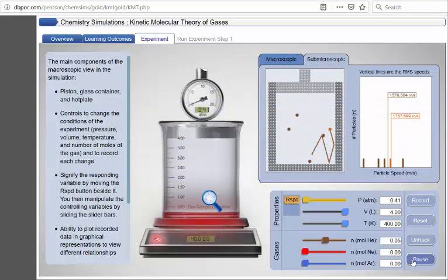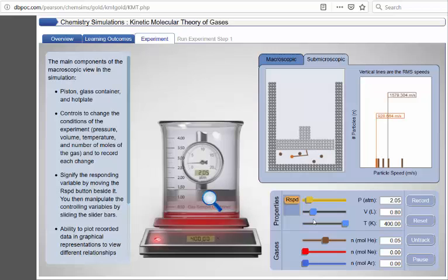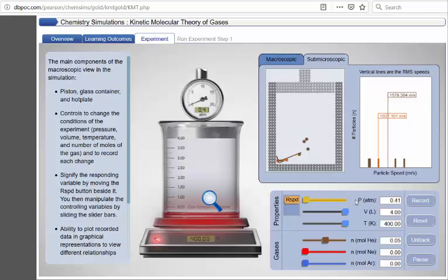Now let's examine the relationship between pressure and volume. Right now we have a volume of 4. We can decrease that volume down quite a bit, and what we'll see is the pressure changes in response. And then when we put that back up, we see that the pressure decreases back down.